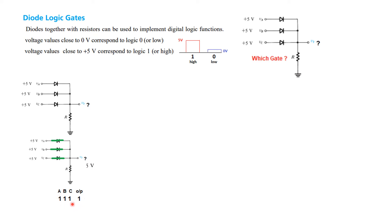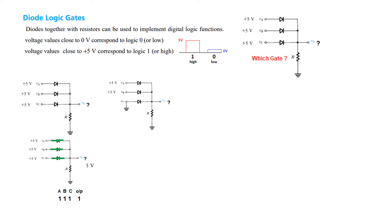From this alone we cannot say whether the circuit is an OR gate or an AND gate, because this result is true for both. So let's do more options. Here, one of the diodes is grounded — so the diagram shows two diodes forward biased and one reverse biased (open). The two forward-biased diodes make this terminal 5V. So with inputs 1, 1, 0, the output is still 5V, that is logic 1.